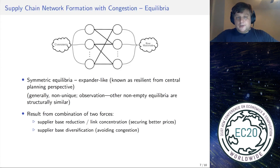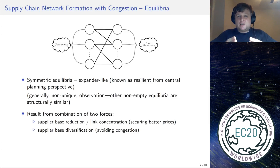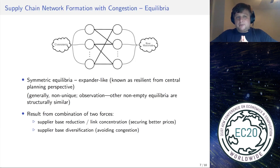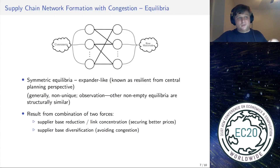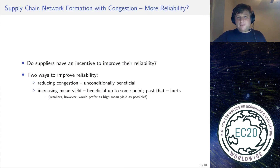These equilibria arise as a result of two competing forces. The first is link concentration from the previous model: retailers like to concentrate links, thereby securing better upstream prices. But a competing force — the congestion force — drives retailers toward spreading out their supplier bases to avoid high congestion costs. The balance between these two forces produces the expander-like equilibrium networks.